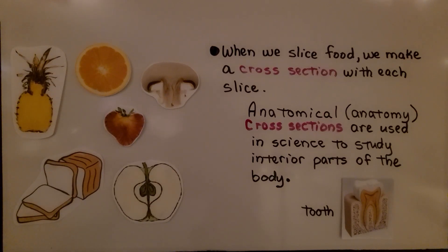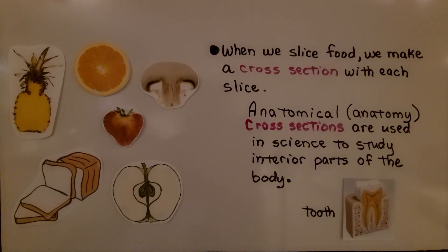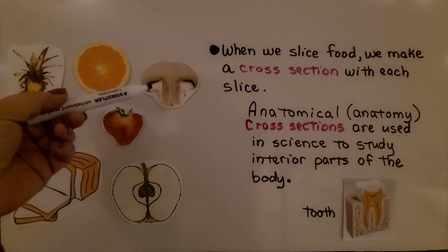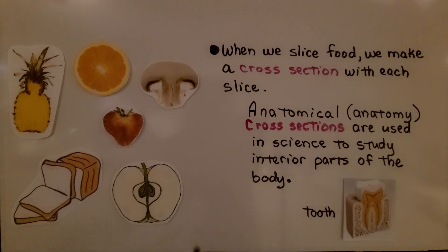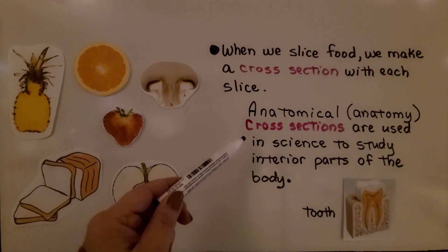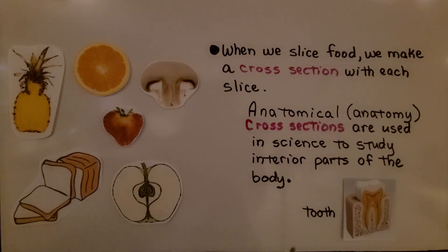When we slice food, we make a cross-section with each slice. Slicing a pineapple from top to bottom, or a slice of an orange, or you've probably had sliced mushrooms. Slicing a strawberry, slicing bread, or slicing an apple. Anatomical cross-sections are used in science to study interior parts of the body. This is the cross-section of a tooth — you can see the root.